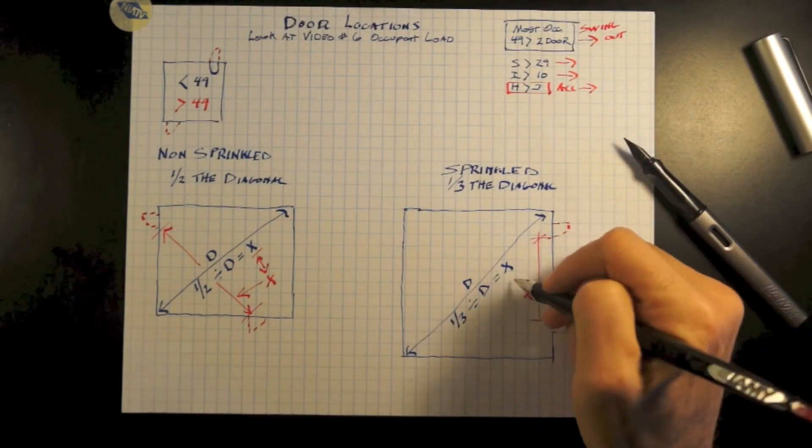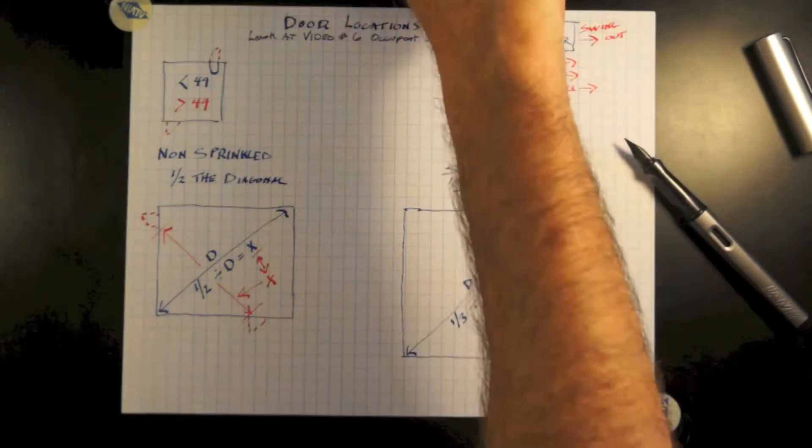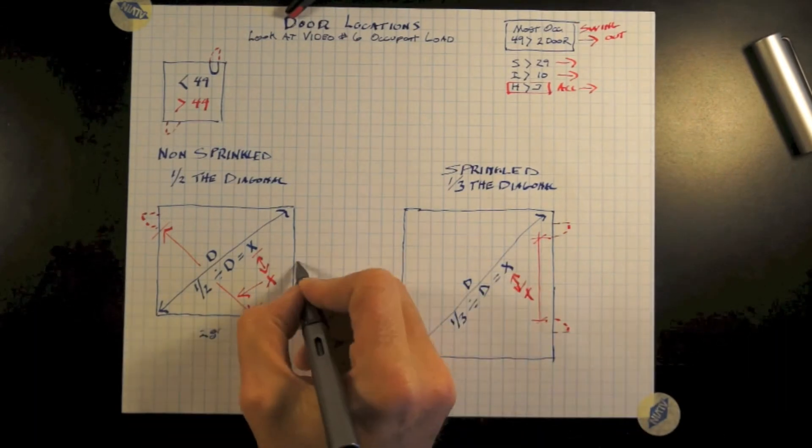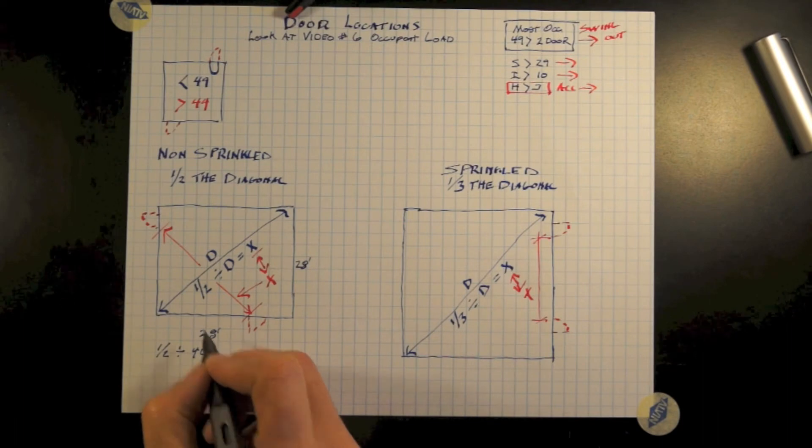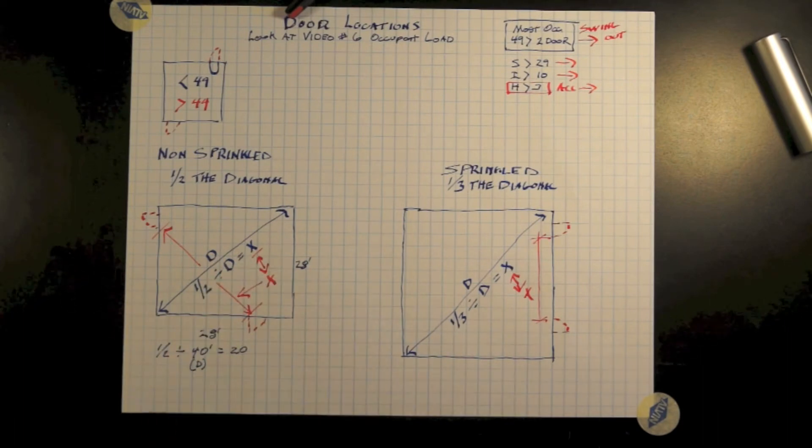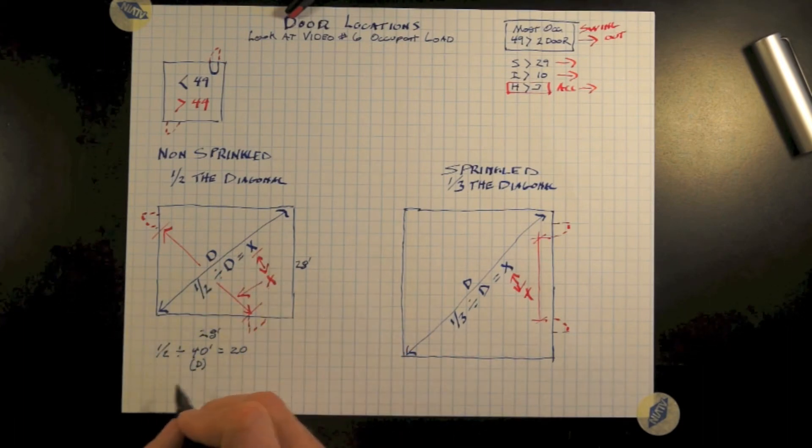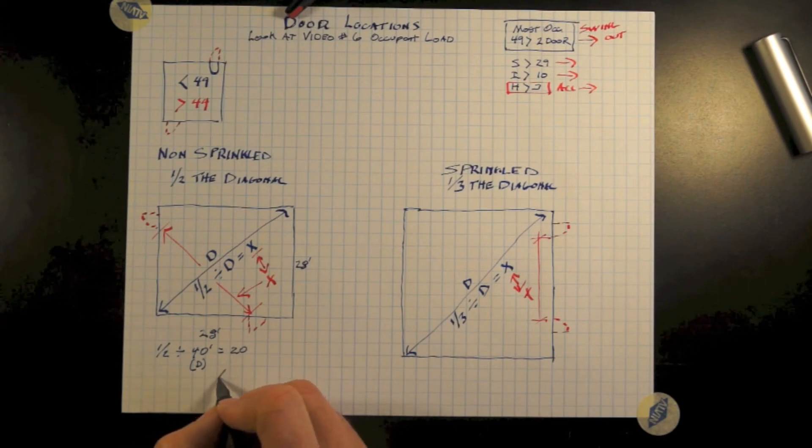Let's physically do the math. On a building or a room that's 28 by 28, our diagonal distance is going to be right at 40 feet. So one half divided by 40 feet equals 20. So X, the distance between the two doors shall be not less than 20 feet.